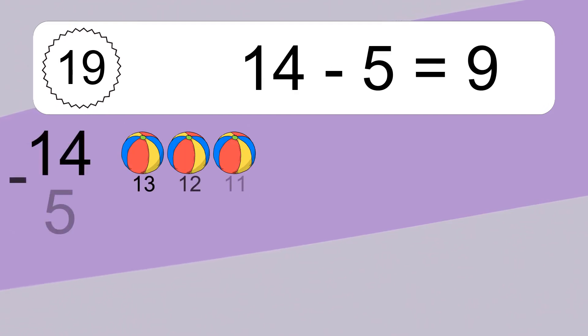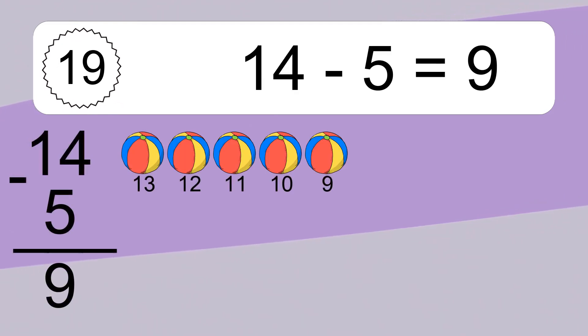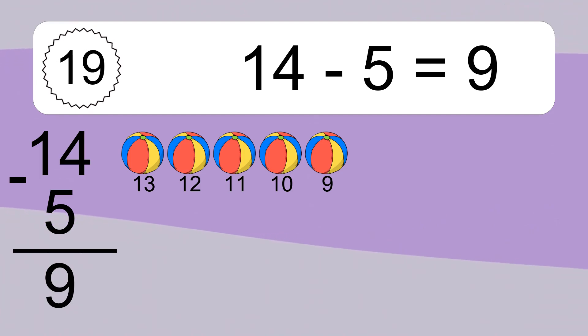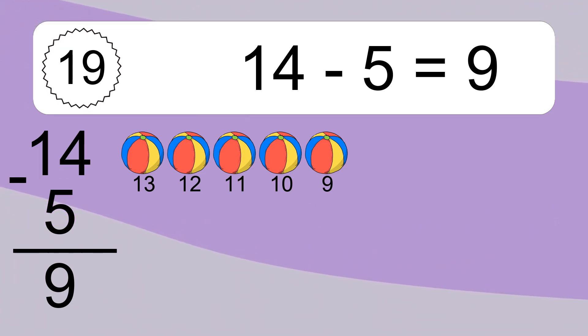14 minus 5 equals what? 14 minus 5 equals 9. Let's count it. 13, 12, 11, 10, 9.